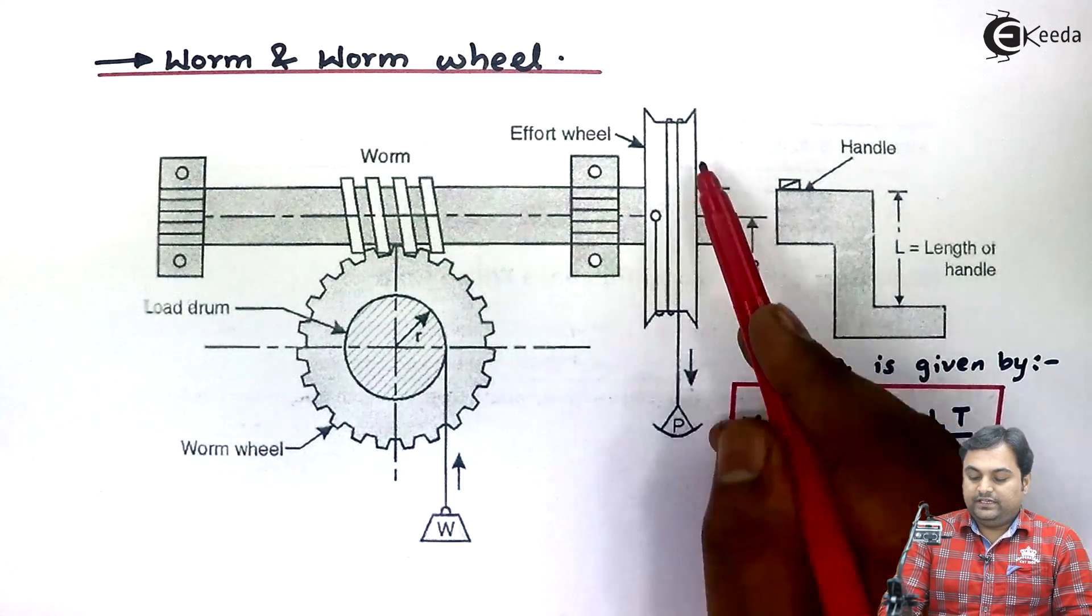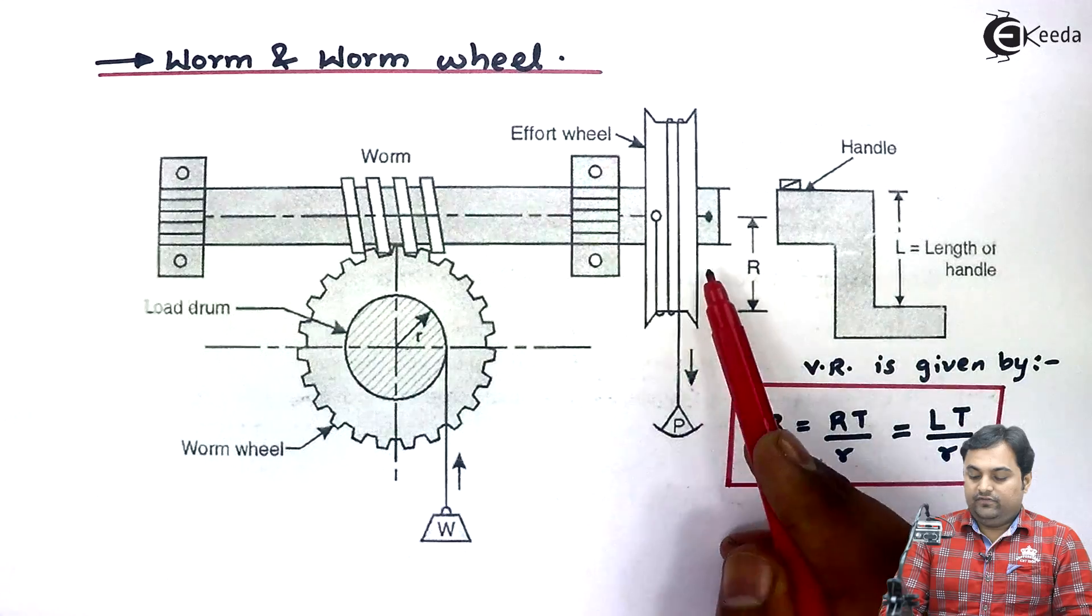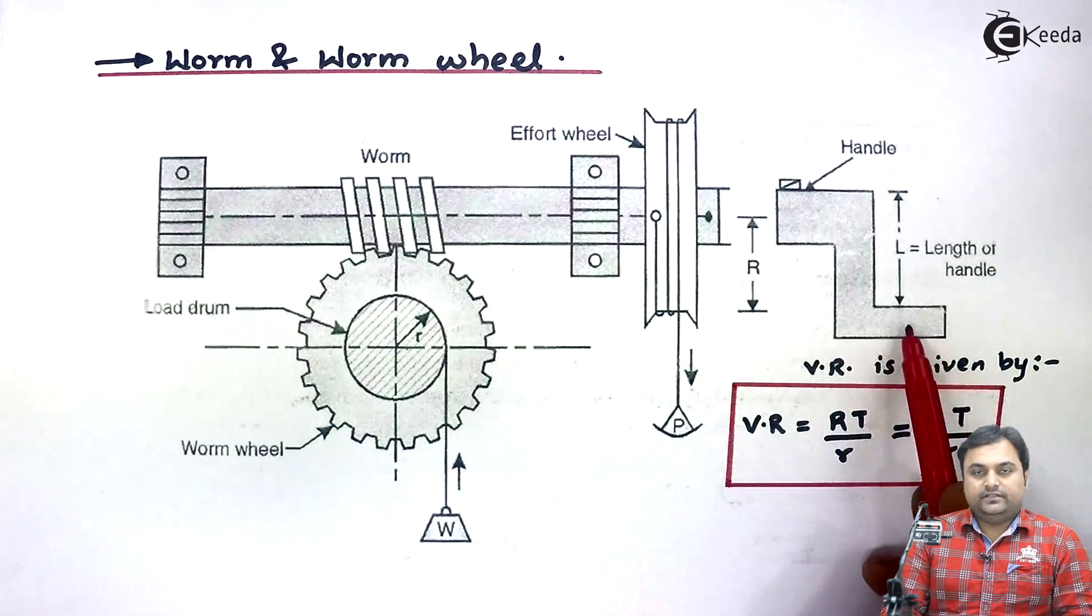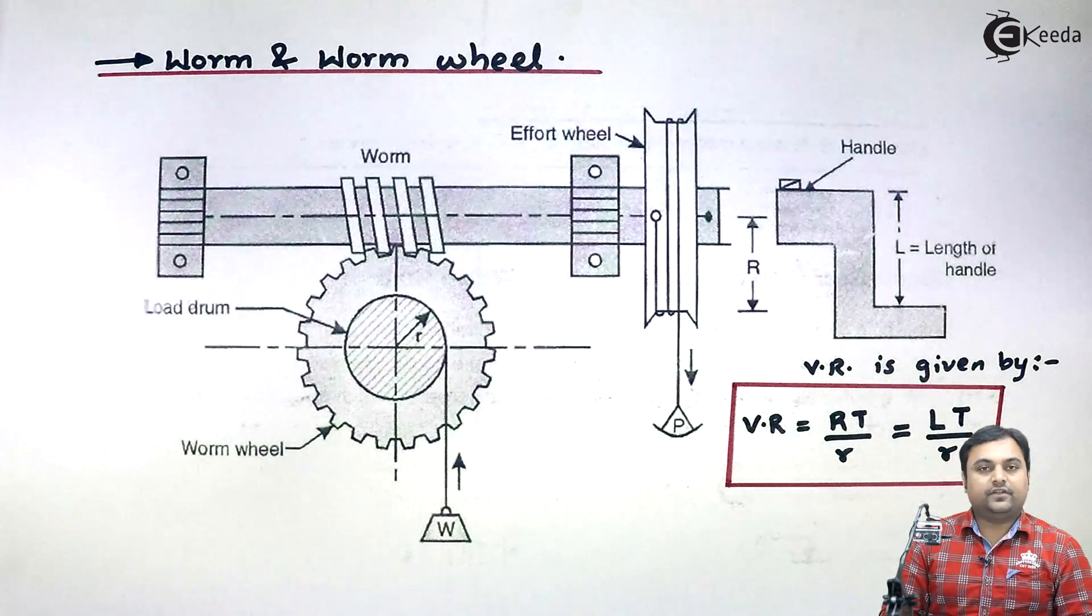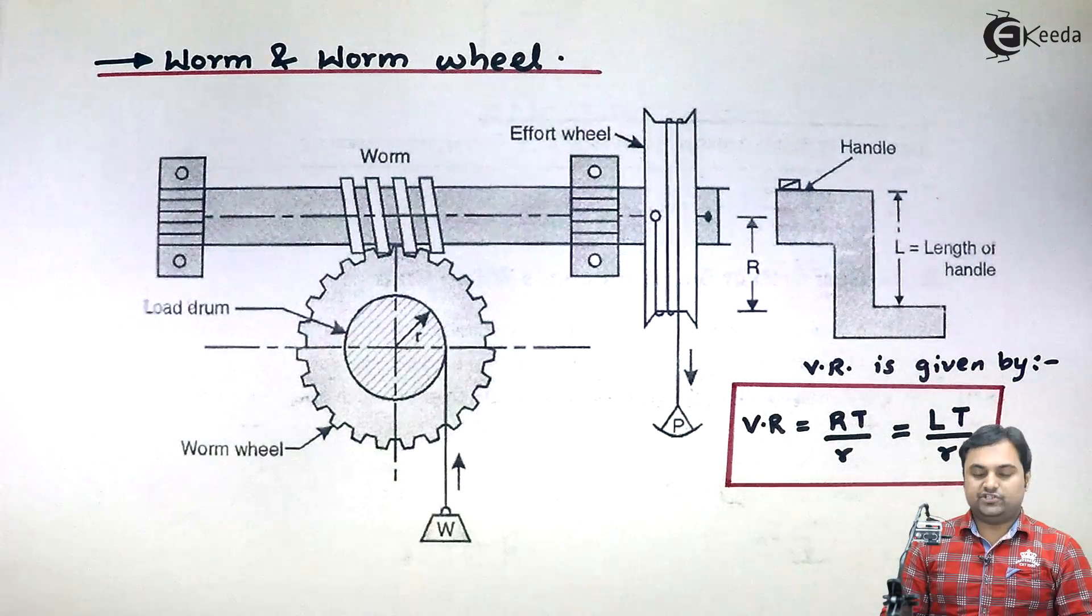Now at the same end they have given one more diagram that instead of effort wheel we can even have the handle. That is instead of having the wheel we would be having the handle. Now this was regarding the construction part.